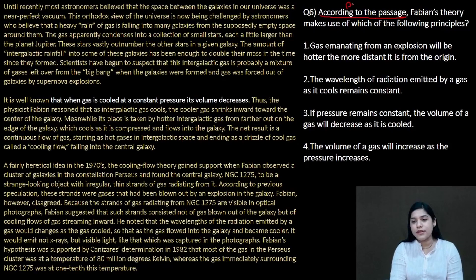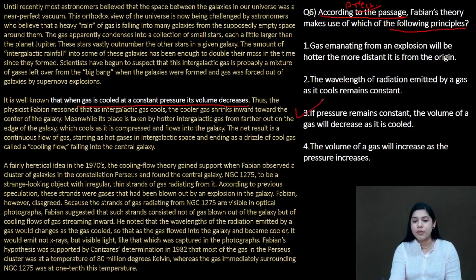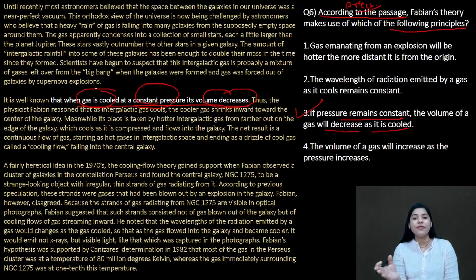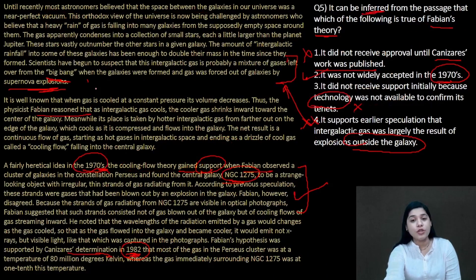Question number 6: according to the passage, Fabian's theory makes use of which of the following principles? This is a direct and easy question. You can read the second paragraph's first line clearly: when gas is cooled at a constant pressure, its volume decreases. Option 3 states: if pressure remains constant, the volume of gas will decrease as it is cooled. That is exactly the same thing. For 'according to' questions, the answer is stated directly — no confusion needed. Make sure to read all four options, but you will find exactly what you read in the passage.